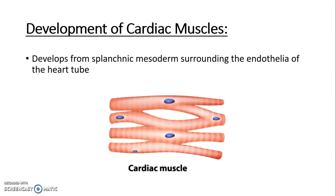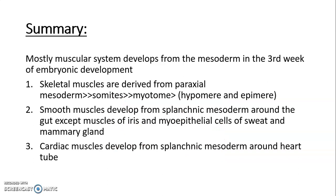Cardiac muscles also develop from splanchnic mesoderm surrounding the endothelia of the heart tube. These cardiac muscles are joined with one another through special attachments which later develop into intercalated discs. They fuse together forming the typical branching network of cardiac muscle, facilitating passage of impulses.